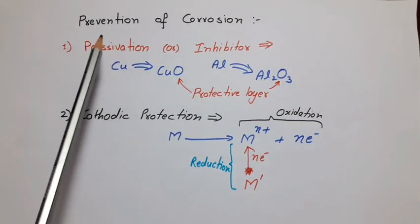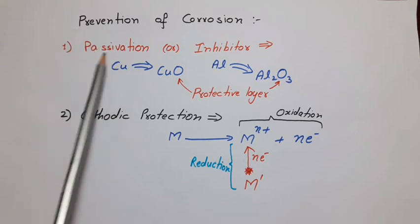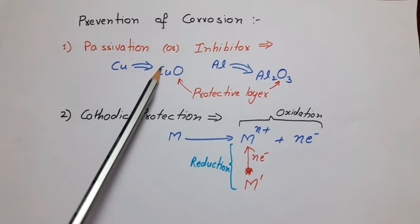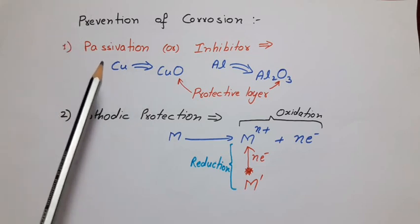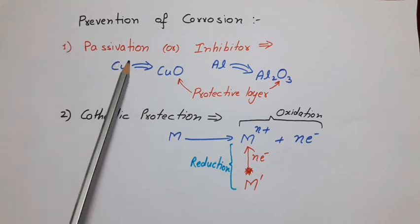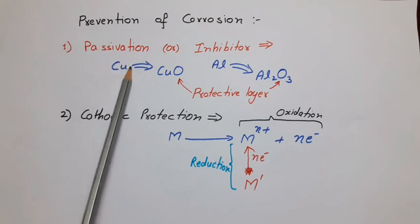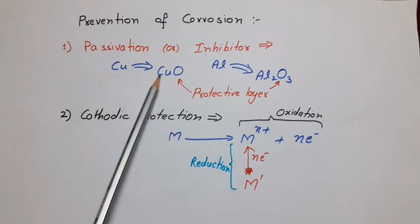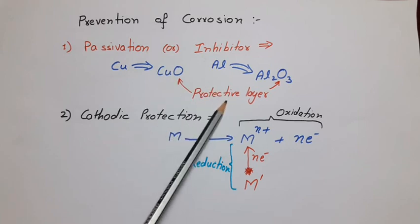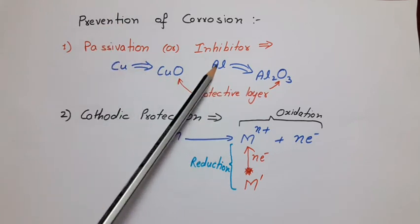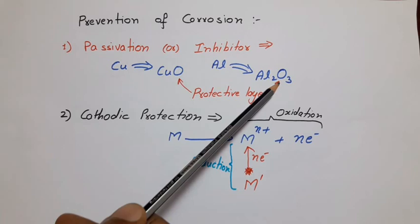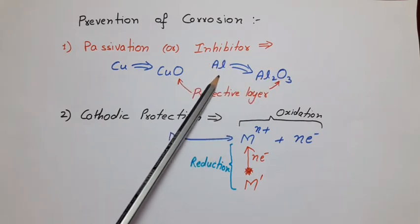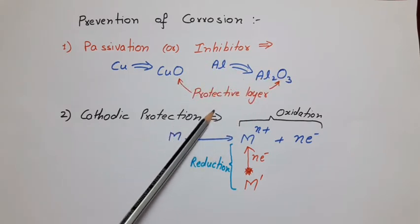First method for the prevention of corrosion is passivation or inhibitor. In this method, we create environmental conditions such that a protective layer automatically forms around the metal. For example, in case of copper, a copper oxide layer is formed which acts as a protective layer and prevents further corrosion. In case of aluminum also, an aluminum oxide layer Al₂O₃ is formed around the metal which also acts as a protective layer.